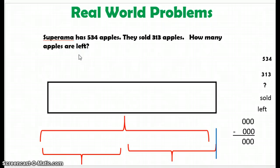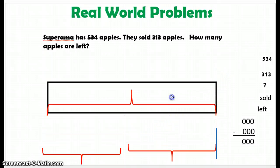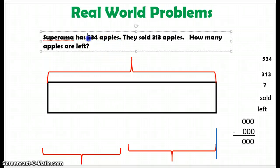Okay, I'm going to set up my bar model. Okay, so we are starting with our whole bar. And that whole bar that we're starting with is 534, because that's how many apples Superama had. Superama started with 534 apples.